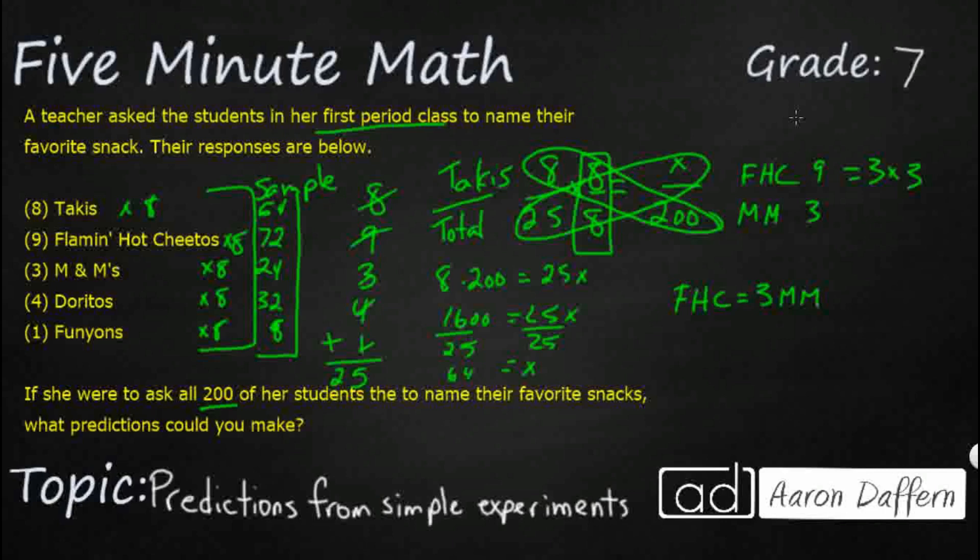We could do the same thing, right, with our Doritos and our Takis. So our Takis are eight and our Doritos are four. We could say, you know what, that Doritos is going to be half of our Takis. So even when we have all 200, we can say Doritos is probably going to equal one half of our Takis. And we see with our numbers here, right, our 32 was half of our 64. So another type of predictions we can make is how large one answer is in response to another.